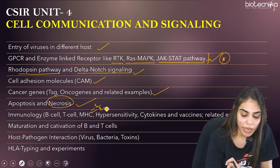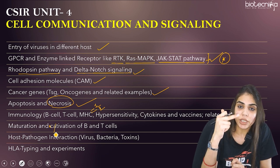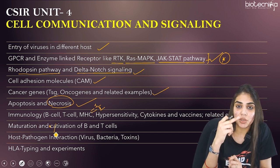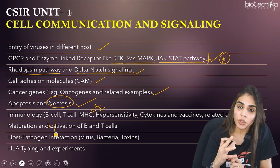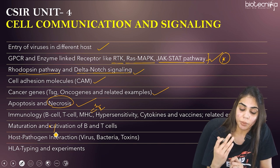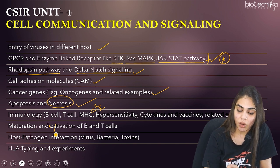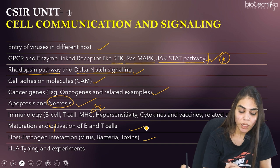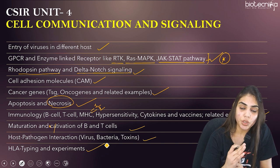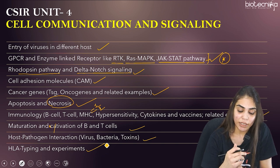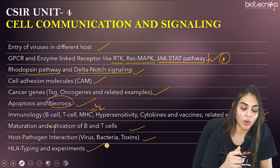The next is maturation and activation of B and T cells — study the profile given in immunology textbooks. Also learn host-pathogen interactions — how pathogens such as viruses, bacteria, and toxins interact with the host. HLA typing and experiments are also important, with questions being asked every year. Focus on HLA typing and experiments as part of immunology.